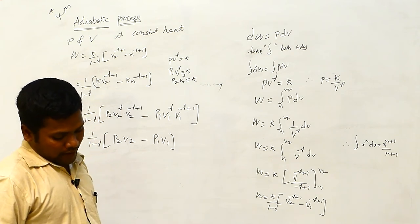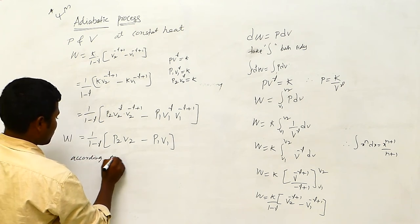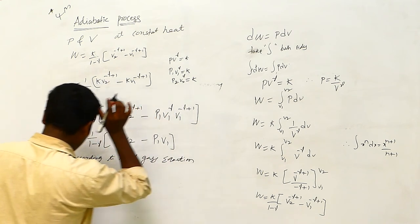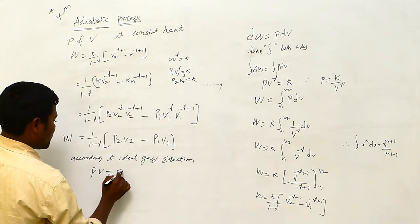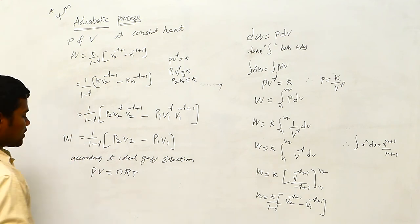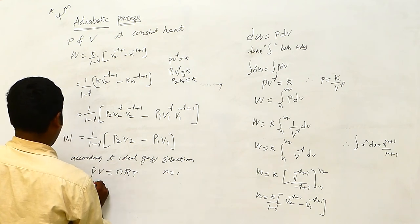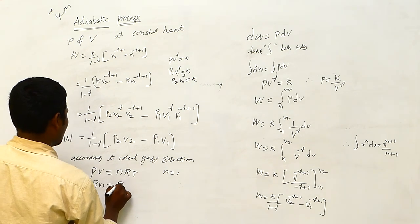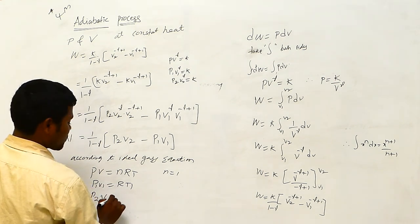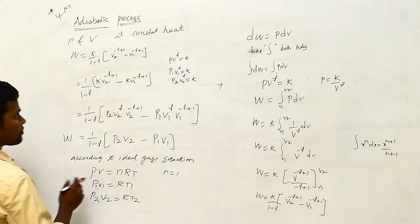According to the ideal gas equation, PV equals nRT. If we take n equals 1, then P1 V1 equals RT1 and P2 V2 equals RT2, where R is the ideal gas constant. Simply substitute these values to get the final expression for work done in the adiabatic process.